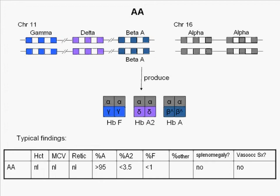This is a guide to sorting out the common sickle cell syndromes. The major globin genes are on chromosomes 11 and 16. The alpha genes are on chromosome 16, and the gamma, delta, and beta genes are on chromosome 11.